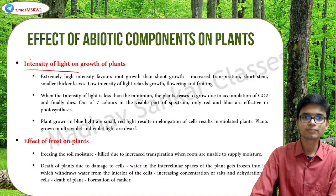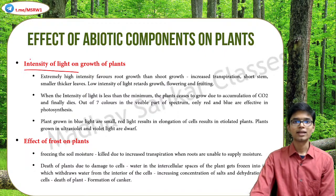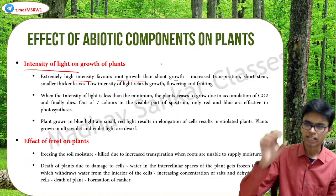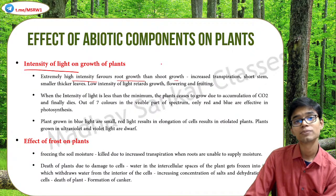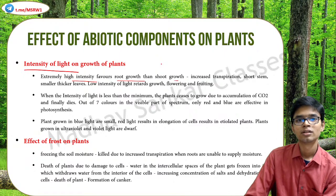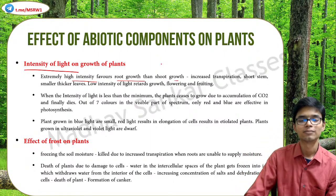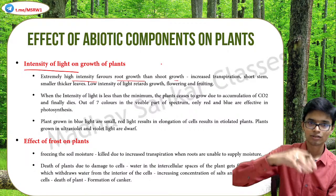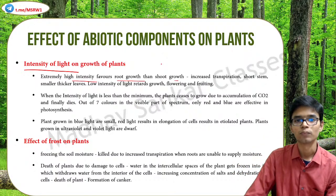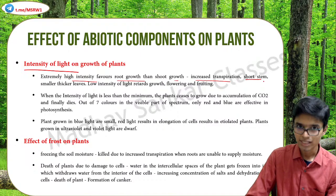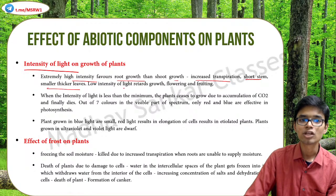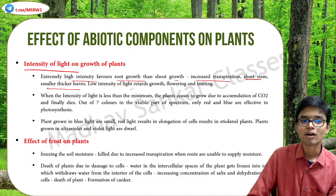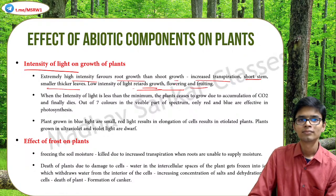Extremely high intensity of light favors root growth over shoot growth. In extreme high intensity light, the root will grow much more than the shoot, the height of the shoot will be very low and stunted. The best example is the cactus in deserts - very high intensity light leads to a very well-developed root system but a very low shoot. Other adaptations to high intensity light include increased transpiration, short stem, and smaller thicker leaves.